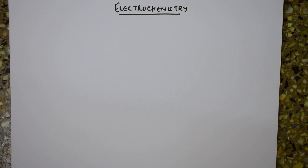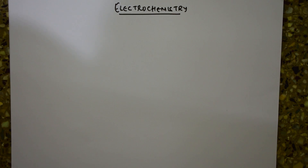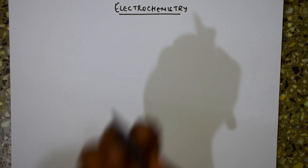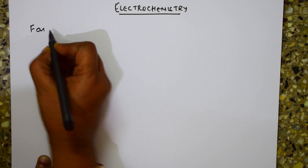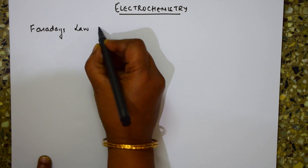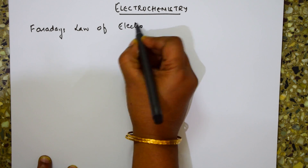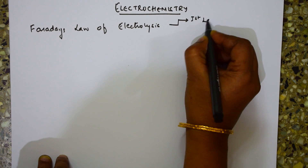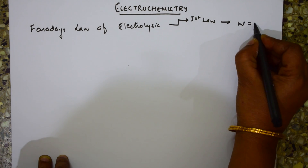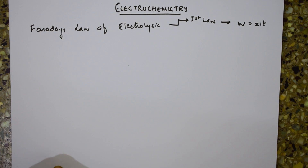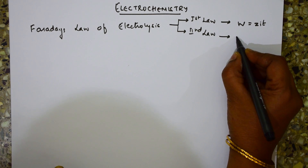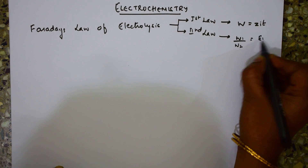In the electrochemistry chapter, note the formulas carefully one after the other so that it is easy to solve the numericals prescribed for your exam. The first formula to remember is Faraday's law of electrolysis. For Faraday's first law, the formula is W = Z·i·t. For the second law, the formula is W1/W2 = E1/E2.